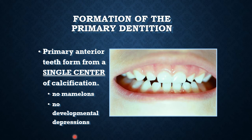This pertains only to primary anterior teeth. Primary posterior teeth have cusps and form from different centers of calcification — either four or five depending on the number of cusps. So there are different centers of calcification in primary posterior teeth, but not in the primary anterior teeth, which develop from a single center of calcification.